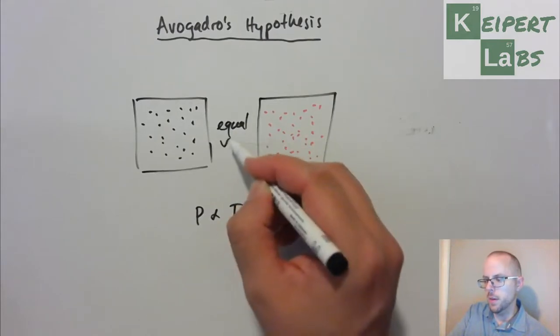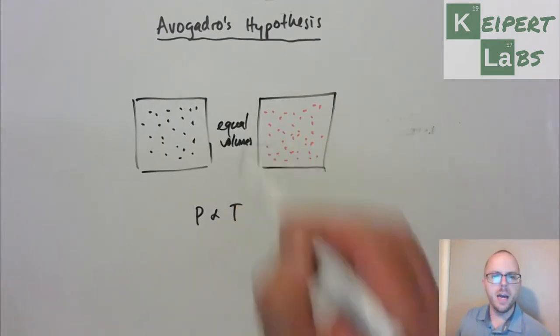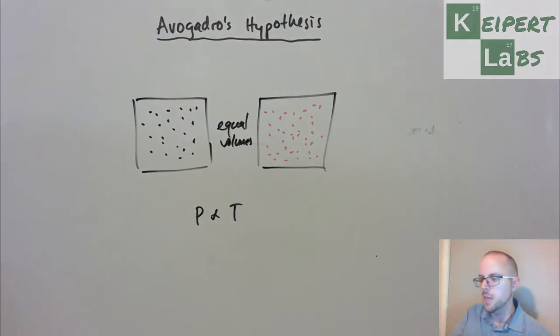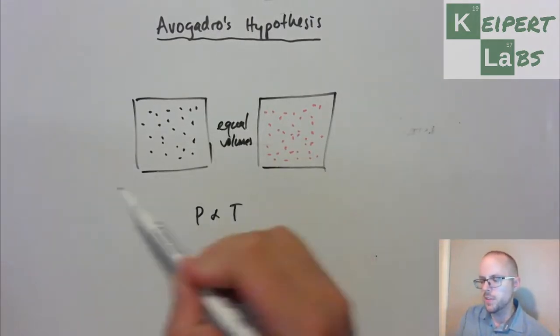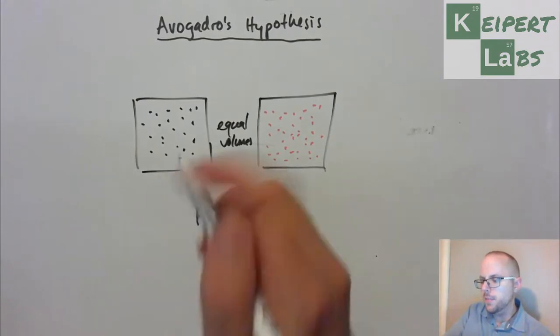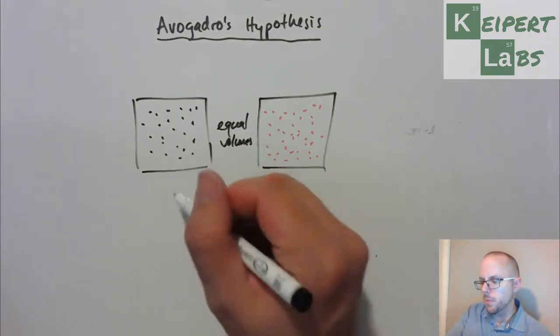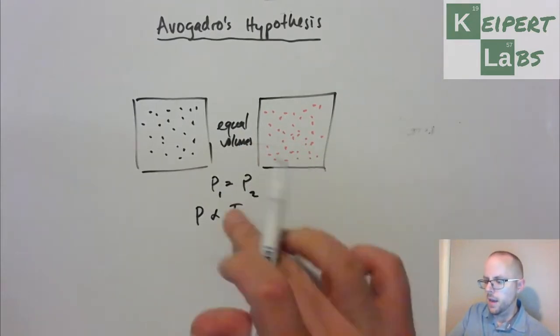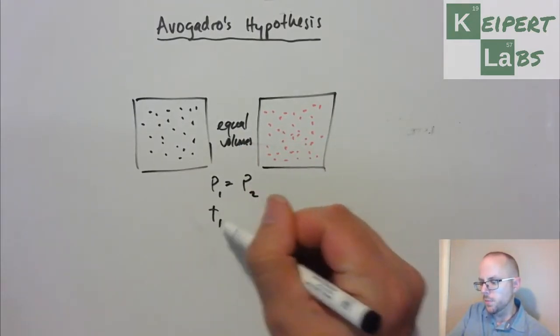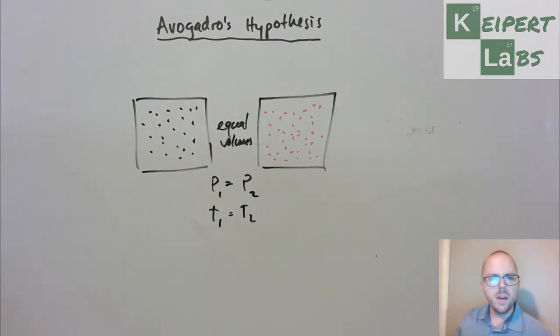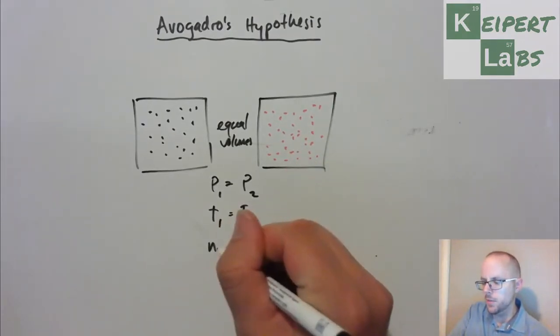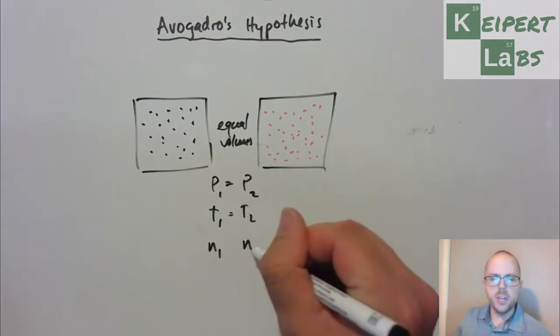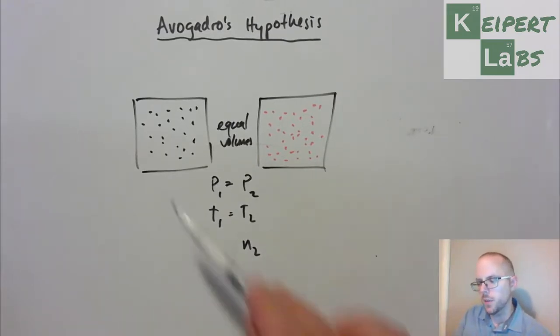In each of these boxes have equal volumes. I realize that my drawings might make that a bit harder to imagine, but bear with me. So we've got the same volumes, boxes of the same size. Now, if we see that the pressure, the pressures are equal, and the temperatures are equal...